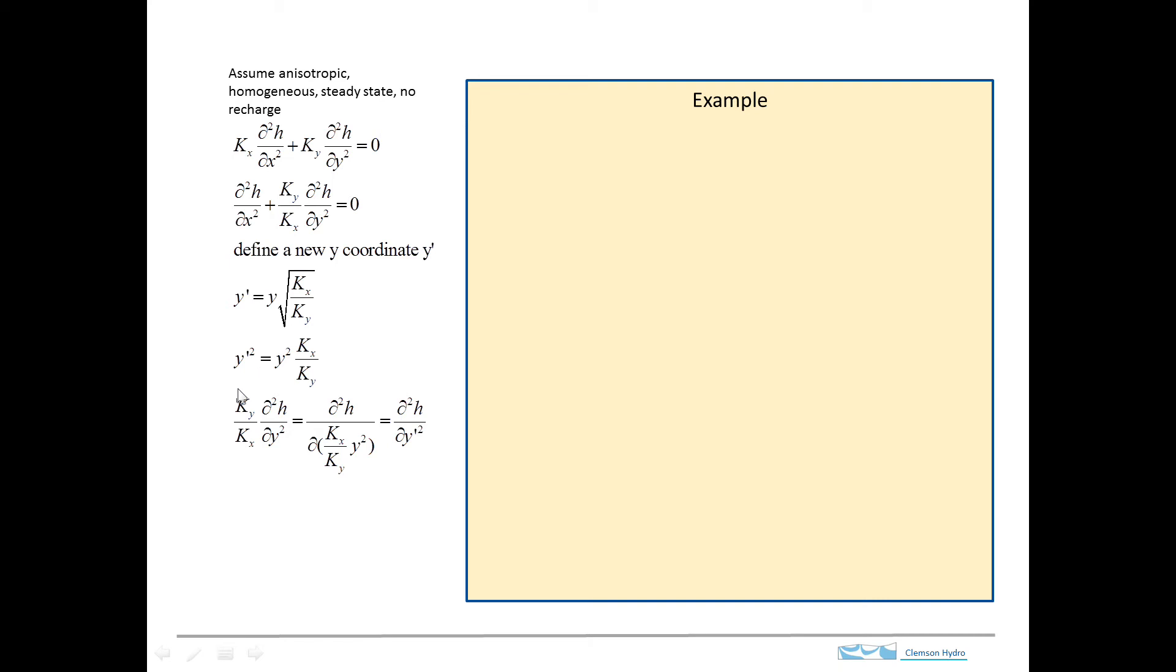So if we square both sides, what we see is that the square of y prime equals y squared times this ratio. And if we look up here to this equation, we see this term right here. We're going to bring that down right here.